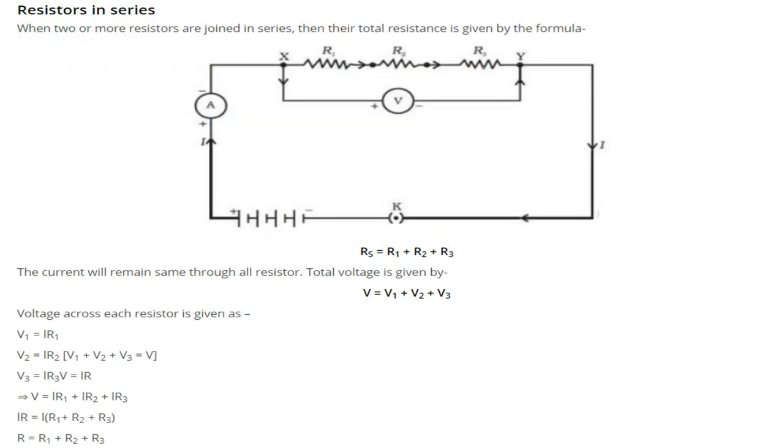Resistor in series. When the resistors are connected like this, one resistance, second resistance, third resistance, and it can be n resistance. When two or more resistors are joined in series, then the total resistance is given by the formula Rs = R1 + R2 + R3. That is, the conclusive resistance is the summation of these resistances, addition of these resistances.